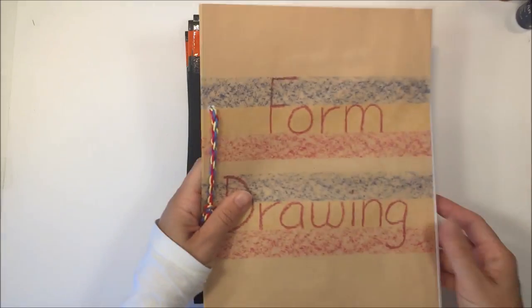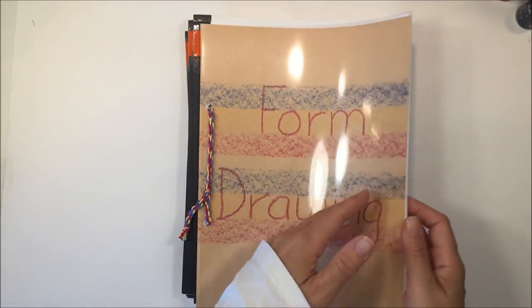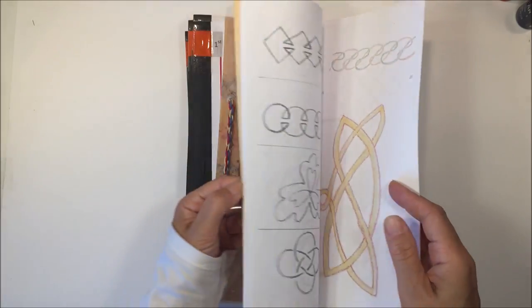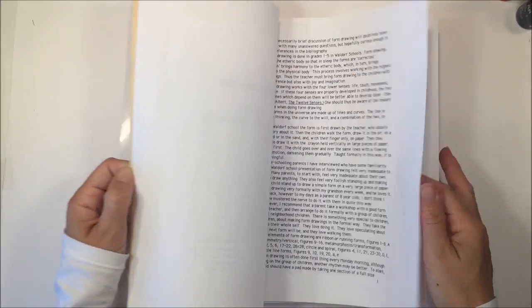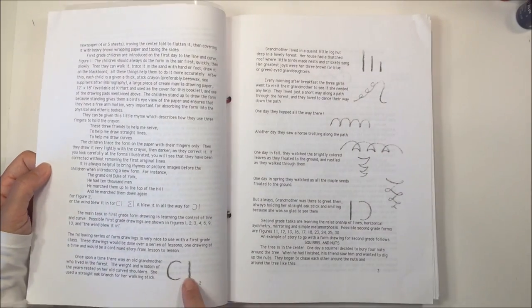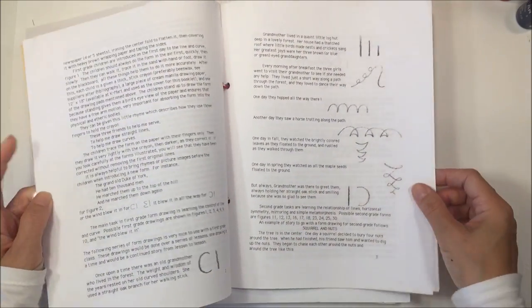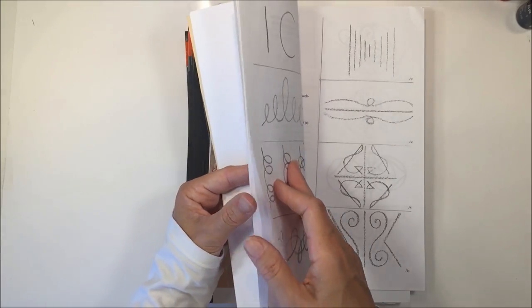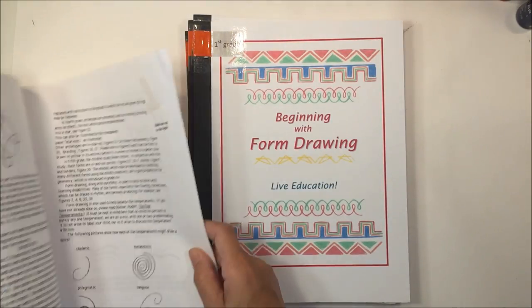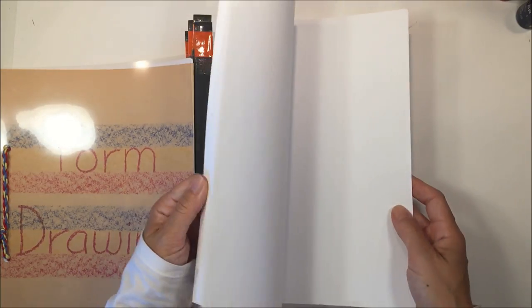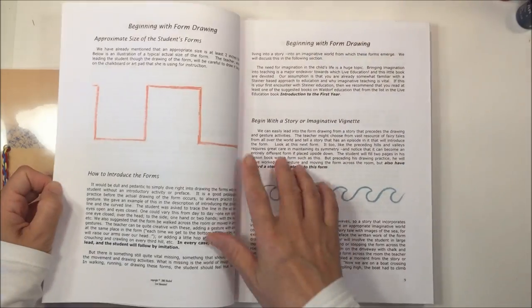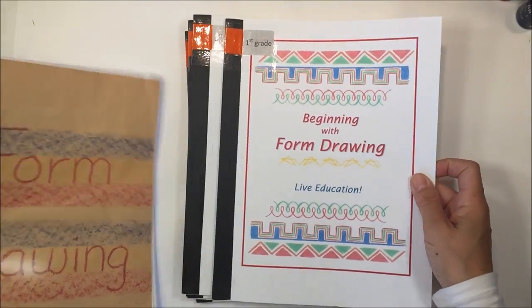I also picked up a supplementary curriculum for form drawing, but it goes through the similar things in the beginning with the straight lines and the curved lines. Then it gets more intricate. These designs would be more suitable for an older child or somebody who's already worked through the basic form drawing. These ones get a little bit complicated towards the end, but they start out really simple.